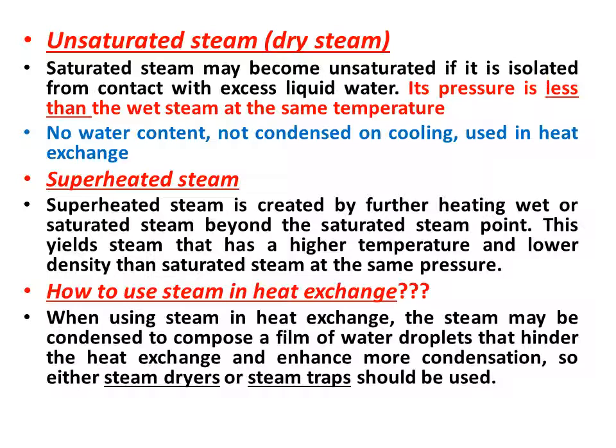Superheated steam, the third type of steam, is created by further heating of wet steam beyond the saturated steam point. This yields steam that has a higher temperature and lower density than saturated steam at the same temperature.